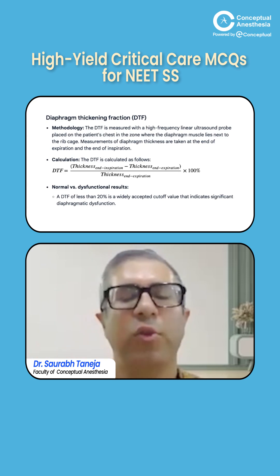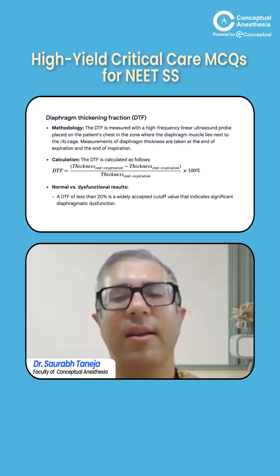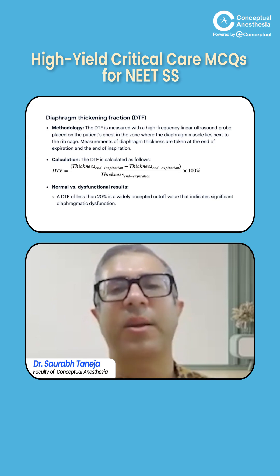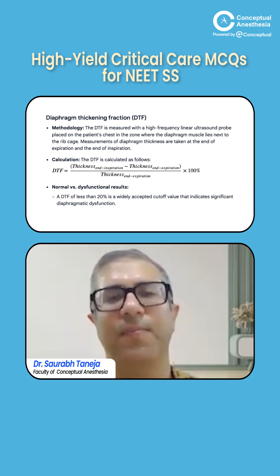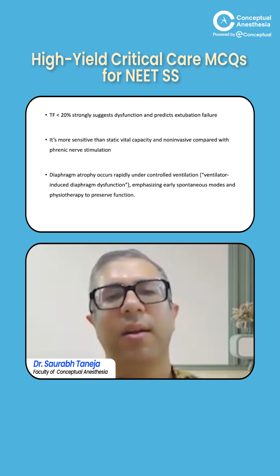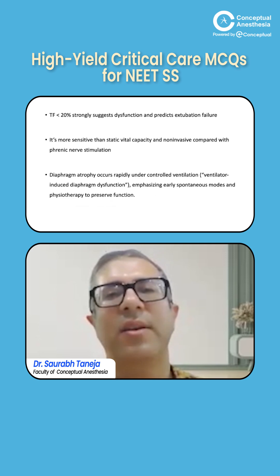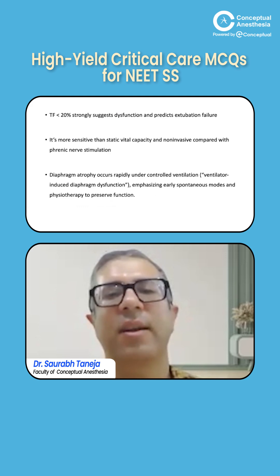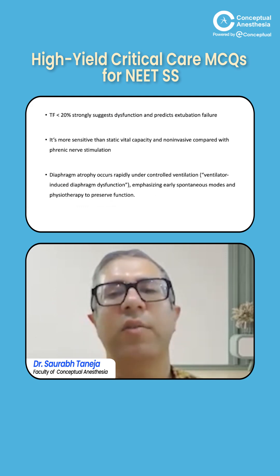The diaphragmatic thickening fraction is: thickness at end-inspiration minus thickness at end-expiration, divided by thickness at end-expiration. A cutoff of less than 20% is widely accepted to indicate significant diaphragmatic dysfunction. This strongly predicts extubation failure and has been validated in multiple studies. It is more sensitive than static vital capacity and less invasive than phrenic nerve stimulation.